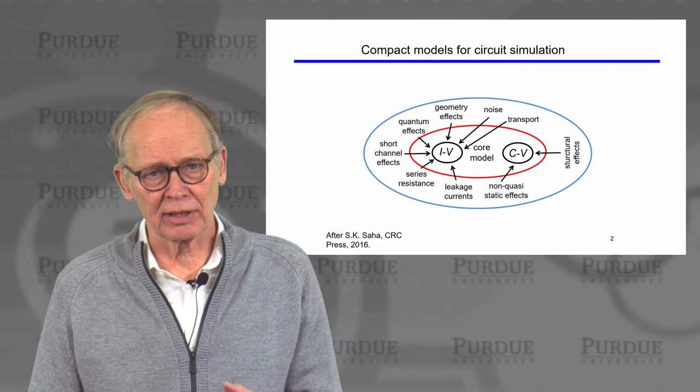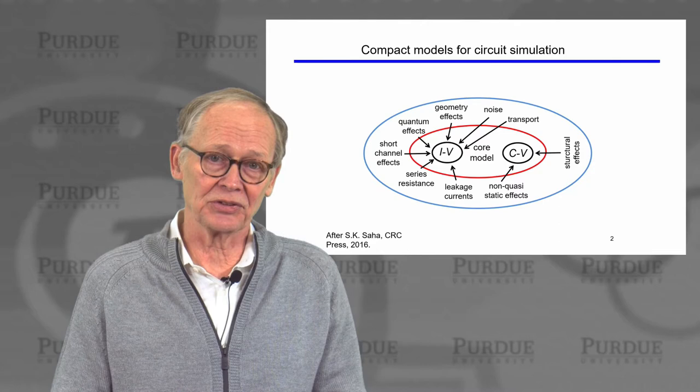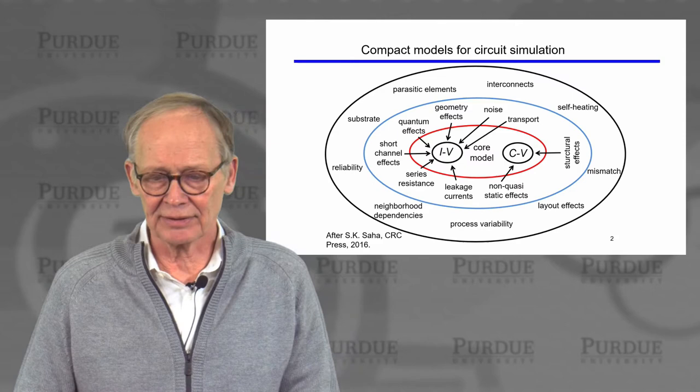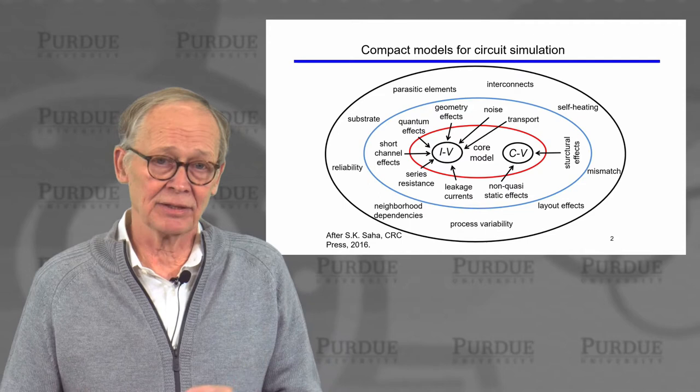That gives us our core model if we include all of those effects — quite a large number of effects in addition to the ones we've discussed in this course, which was focused on the basic operation of the transistor itself. But then the transistor is embedded in a circuit. The interconnects connect one transistor to another, or one gate to another, and they're critically important for the operation of the circuit and system.